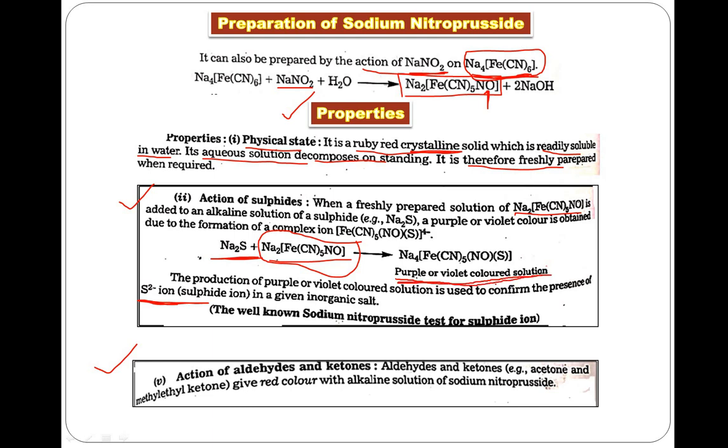The presence of this purple or violet color indicates that the solution contains sulfide ion. This test is called the sodium nitroprusside test and is frequently used in the lab for the detection of sulfide ions. This works under alkaline conditions when pH is greater than seven.